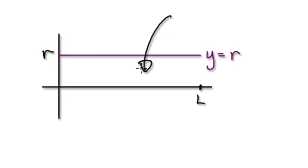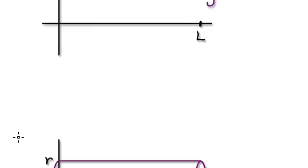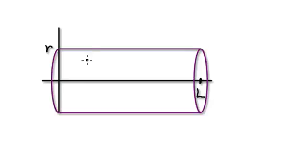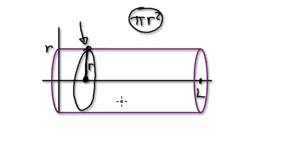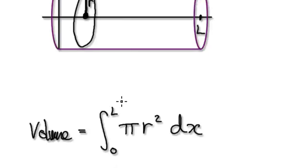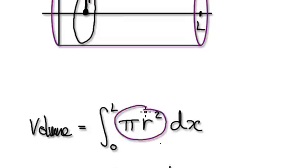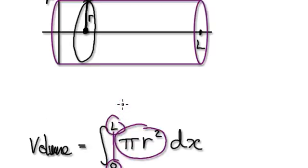So to do this, press pause and have a go. If you look at the first disk here, you need to get the height, which is r. For this disk it will be pi times r squared — that gives you the area. So that would then give you this area here.